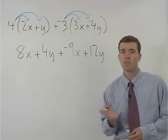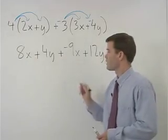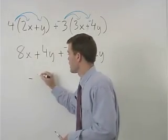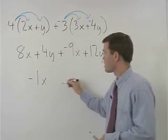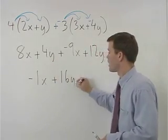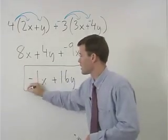Now we can combine like terms. 8x plus negative 9x is negative 1x and 4y plus 12y is plus 16y. And that's our answer.